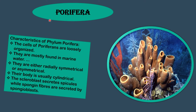The first phylum is Porifera. The cells of poriferans are loosely organized. They are mostly found in marine water. They are either radially symmetrical or asymmetrical. Their body is usually cylindrical. The scleroblast secretes spicules while spongine fibers are secreted by spongioblasts. Phylum Porifera comprises of aquatic animals that are mostly marine. They are found attached to the ocean floor and cannot move.